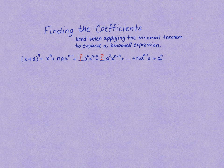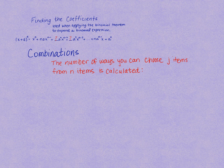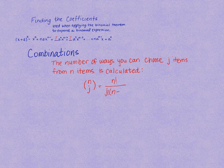These coefficients actually come from the mathematical formula used for counting combinations. The number of ways you can choose j items from n items is calculated by n factorial divided by j factorial times (n minus j) factorial.